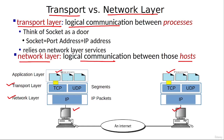Let us discuss this in a bit more detail. The messages generated by a process are given to the transport layer through the socket, which is called the source socket. You can think of a socket as a door, so the messages are slipped into the transport layer through this door. At the transport layer, either the TCP or the UDP protocol can be used, and in this example the TCP protocol is being used.